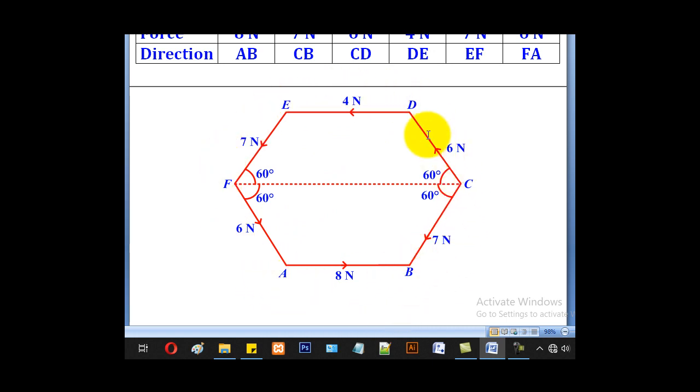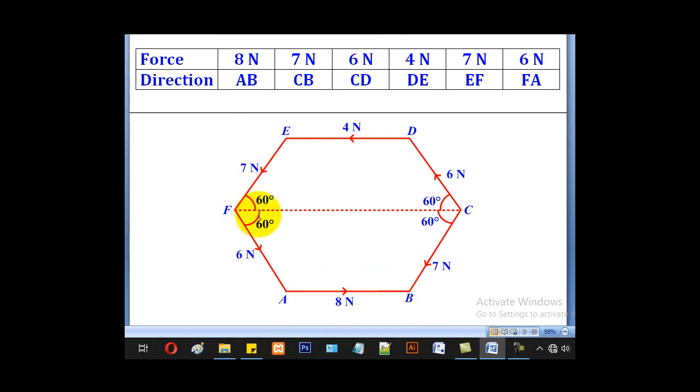So A, B, C, D, E, F. From there, we shall now include the forces. AB is for 8. CB is 7.